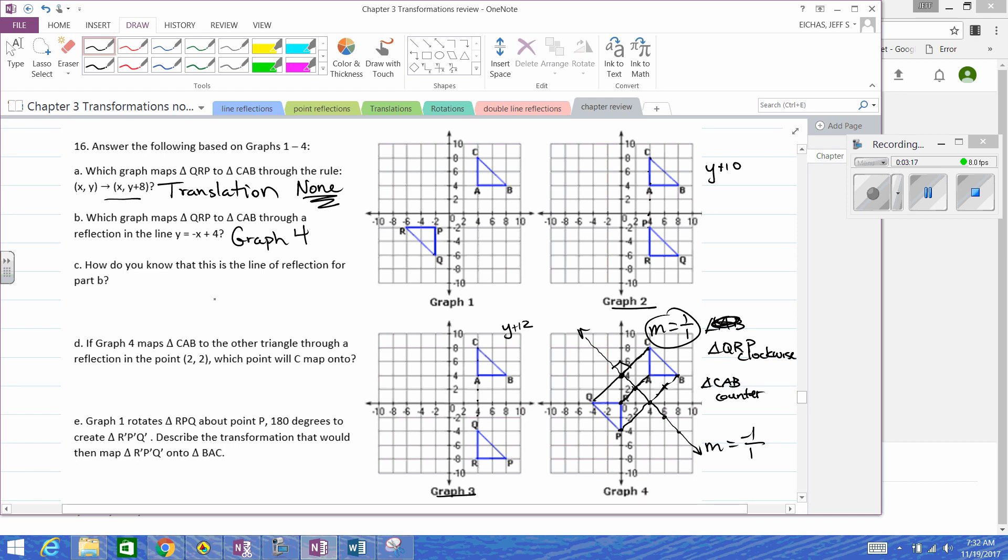How do you know that this is the line of reflection for part B? Well, I started with: orientation is not preserved. The rest are okay. And let's see, Q to C has a slope of one, where y equals negative x plus four has m equal to negative one over one, so that's perpendicular, which is important in a line reflection.